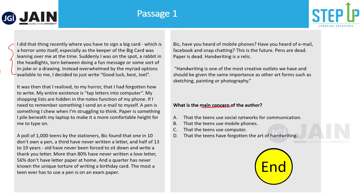The main concern is not that teens use social networks, mobile phones, or computers — those are side issues. The central concern is that teens have forgotten the art of handwriting. Even in the last paragraph the author says 'handwriting is one of the most creative outlets we have and should be given the same importance.' The answer is option D. For overall understanding questions, make sure your chosen option is all-inclusive and covers the full scope of the passage.